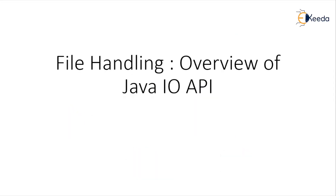First of all, what do you mean by API? API stands for Application Programming Interface. Whenever you want to develop any application and you need certain functionality, that will be provided by the API. In Java, we have predefined packages. IO is one of the predefined packages which stands for input-output. Any input-output operations related to files — Java applications which will deal with files — will be developed using this Java IO package. The name of the package is java.io.